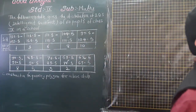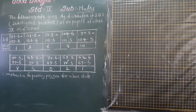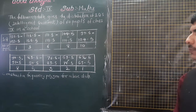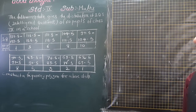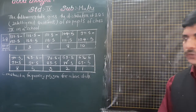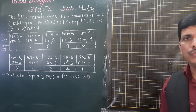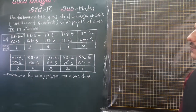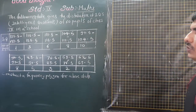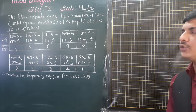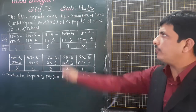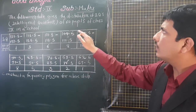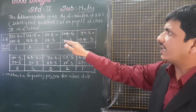Hello everybody. Today we are going to see some examples which are different on the Frequency Polygon. We have already seen some examples. Once again, we are going to see some examples for practice. Today's first example is: the distribution of IQs — that is the intelligence quotient — of 60 people of class 9 in a school.